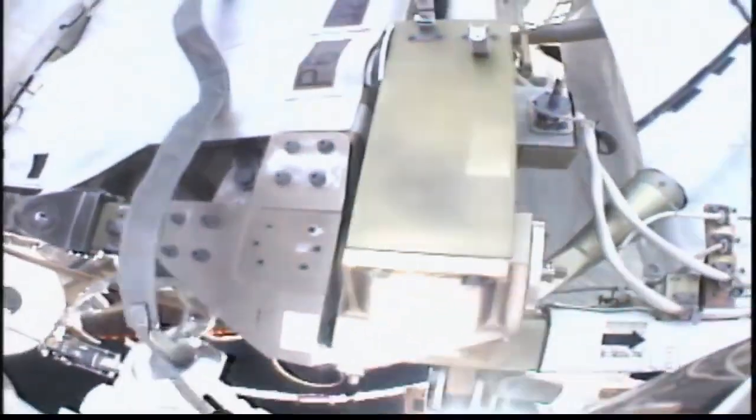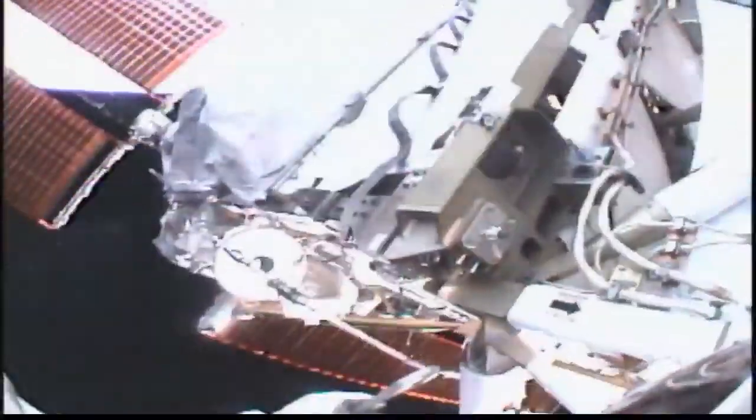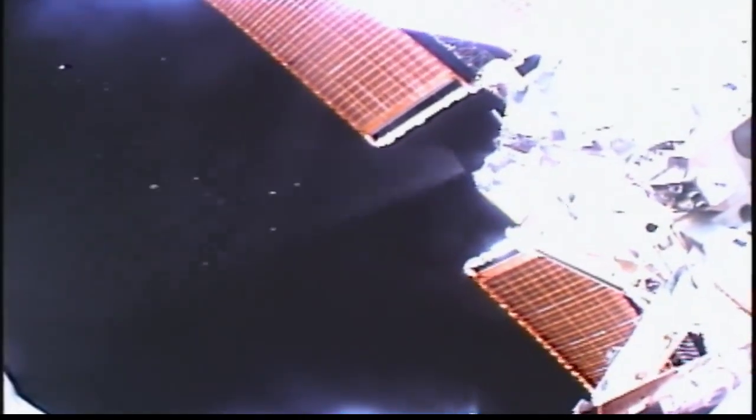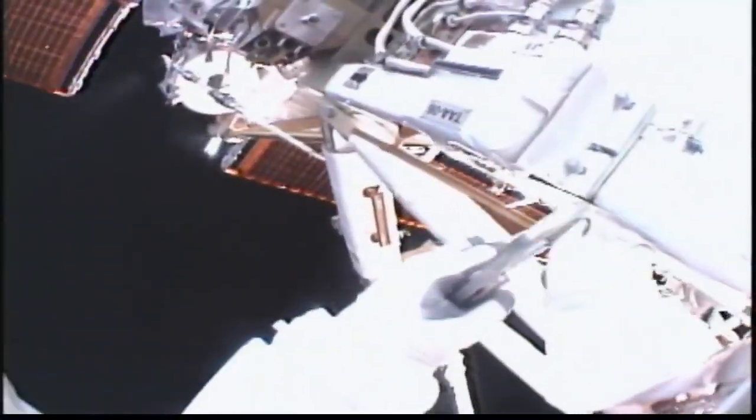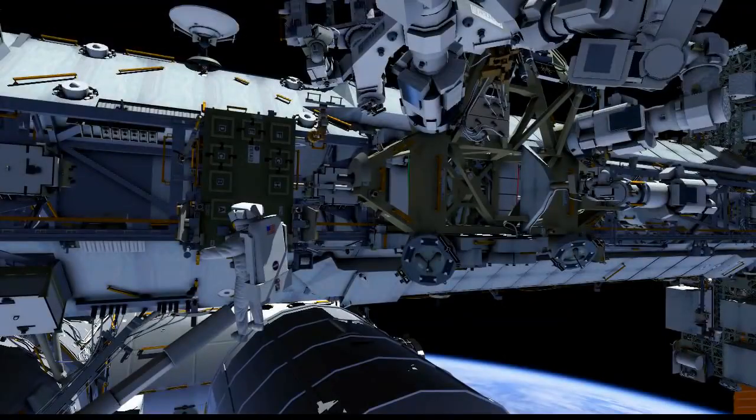You can see he just opened the valve to the vent tool, and you'll see him look back over his shoulder, and you can see the venting of ammonia out of the system. So we expect to have a very similar view on US EVA 33. Expect that vent to take about 17 minutes to fully get all the ammonia out of the line.